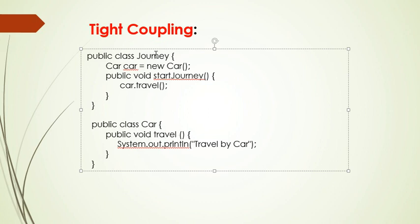That means the main class calls this Journey class, so we have to call this method from the Journey class. Here, Journey class is tightly coupled with Car class.